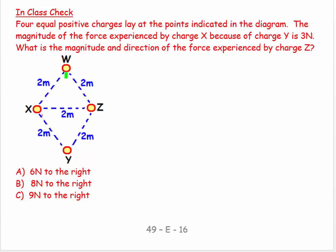So one, two, three, four, W, X, Y, Z, lay at points indicated in the diagram. They're all on equilateral triangles, two meters to the side.